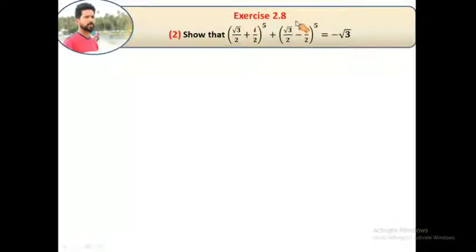Hi students, Exercise 2.8 question number 2. Show that (√3/2 + i/2)^5 plus (√3/2 - i/2)^5 equal to -√3. So we need to verify this term equals -√3. First, find out the polar form of this term.